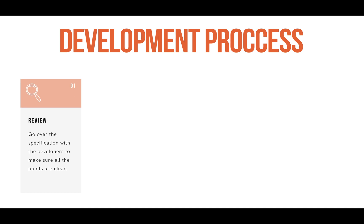The first step in the development process is the review process — something we've talked about a little bit in the last lesson. This is when you will review the specification document with your developers. The purpose of this stage is for you to make sure the developers have a perfect understanding of the specification. This is their opportunity to bring up any questions they have, anything that is unclear, or any information they are missing. It is also your opportunity to give them any specific guidelines you want them to follow during development.